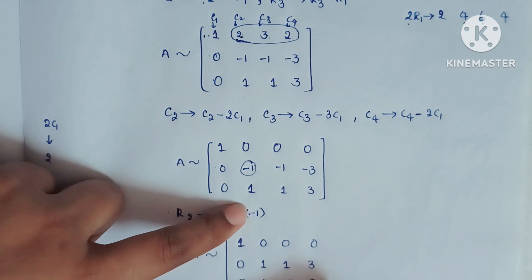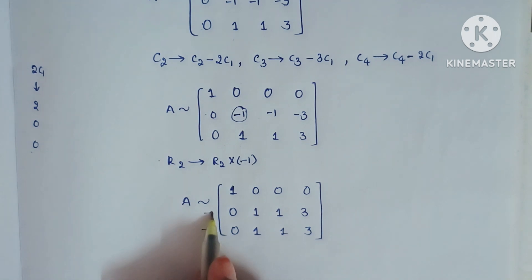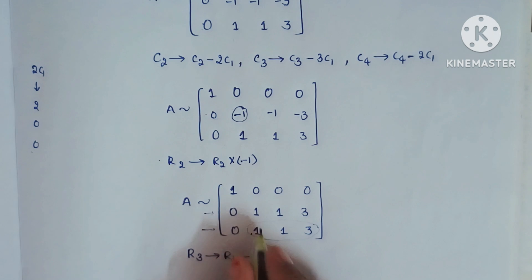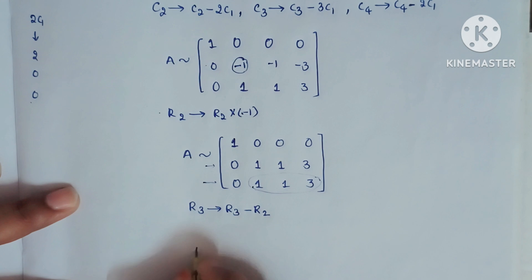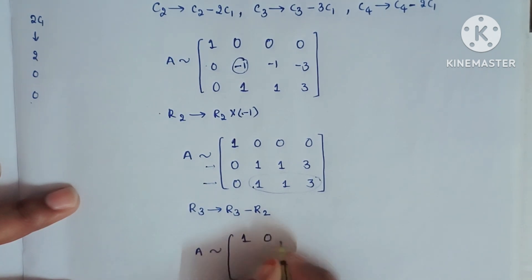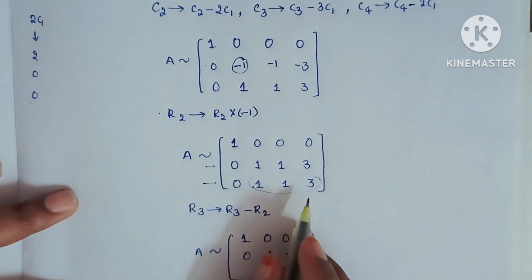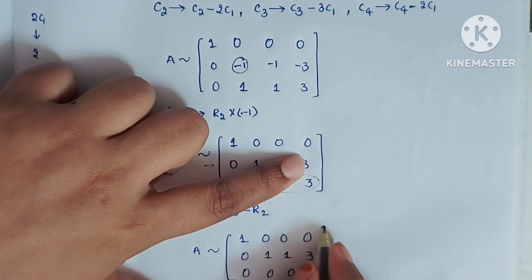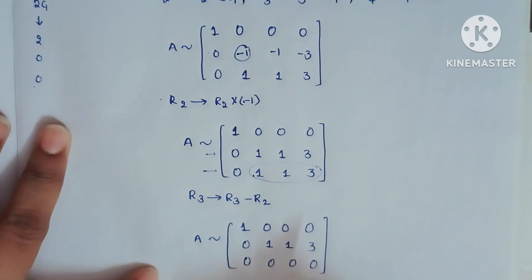There is no change in row 3. Observing the matrix, row 3 and row 2 are now similar, so we use R3 → R3 − R2 to convert the row 3 elements to 0. After this operation: 0−0=0, 1−1=0, 1−1=0, 3−3=0. We now have this updated matrix.